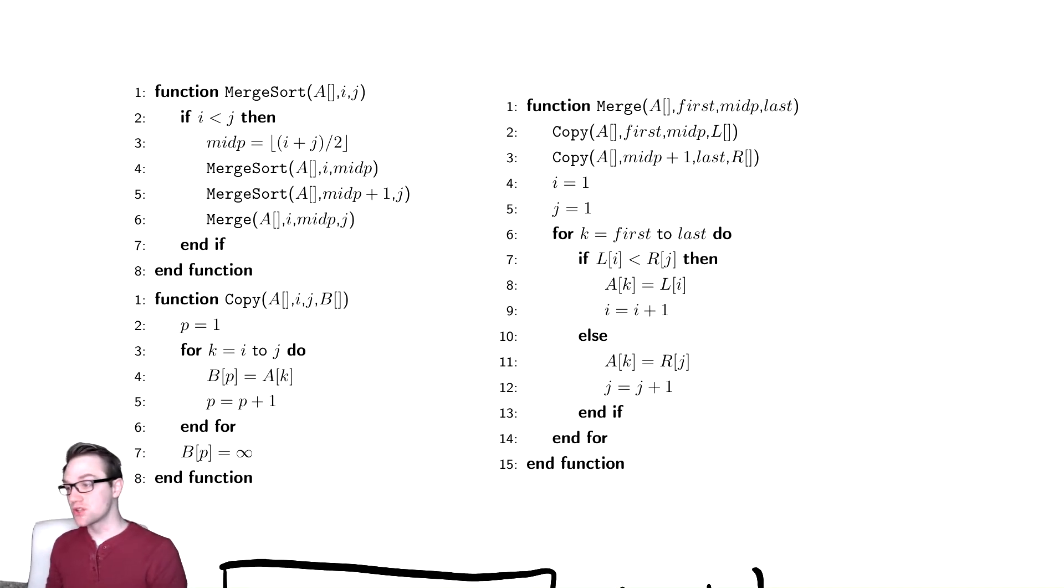The actual code for merge sort in the top left here is relatively straightforward. If the array has elements we're sorting between i and j, then we find the midpoint and merge sort the left half and merge sort the right half. That's the split and sort, and then we merge those back together. You take an array, split it in the middle, sort both halves, then merge it back together.